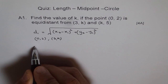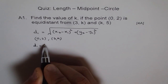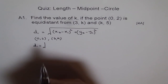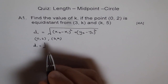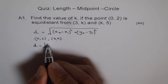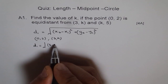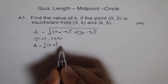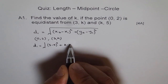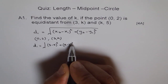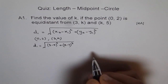So d1 is equal to the square root of (3 minus 0) square plus (k minus 2) square. Let me write: 3 minus 0 square plus k minus 2 square, square root.